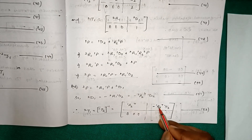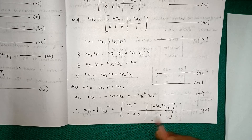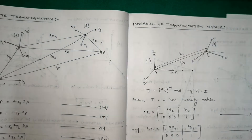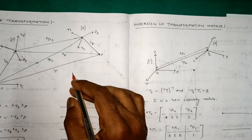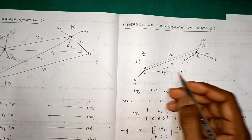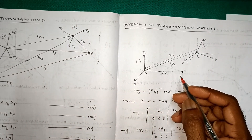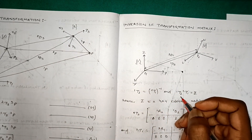So 2t1 is equal to 1t2 inverse, which equals [1r2 transpose, minus 1r2 transpose times 1d2; 0 0 0 1]. This is all about composite transformation and inversion of transformation matrix. Thank you.